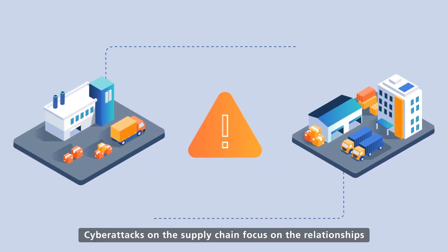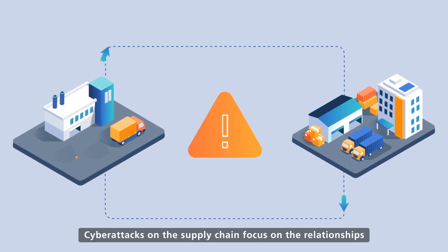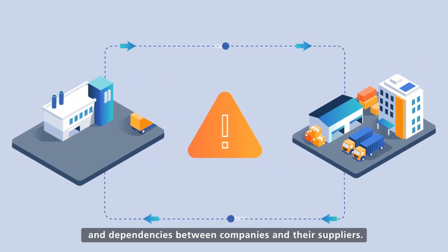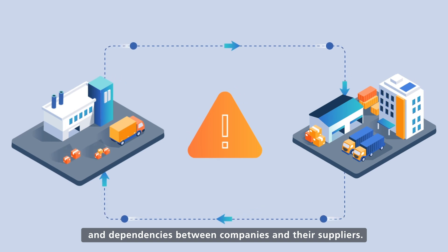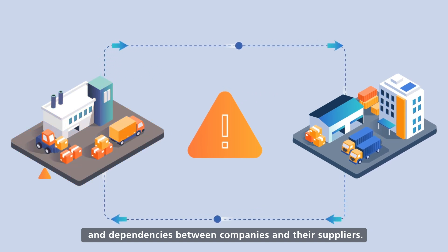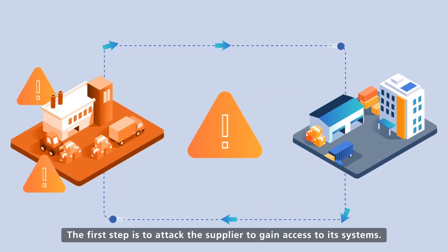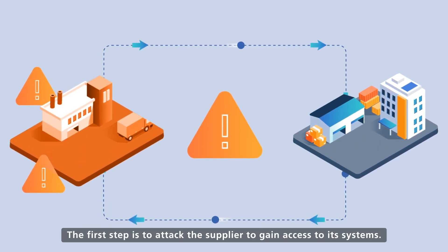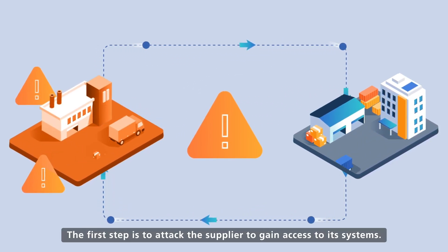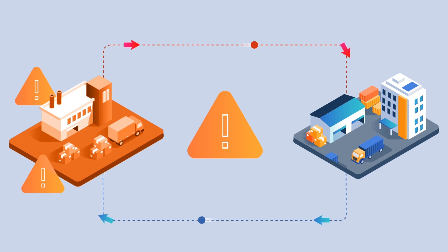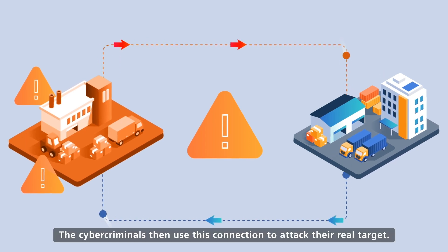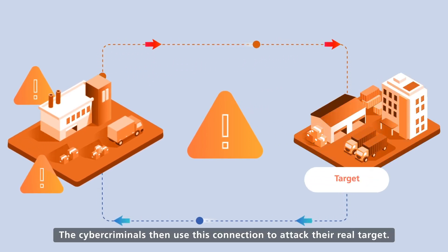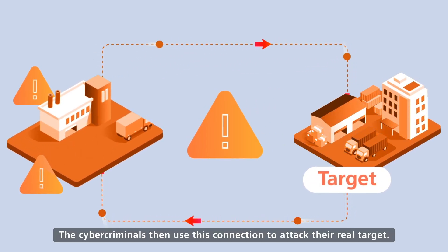Cyberattacks on the supply chain focus on the relationships and dependencies between companies and their suppliers. The first step is to attack the supplier to gain access to its systems. The cybercriminals then use this connection to attack their real target.